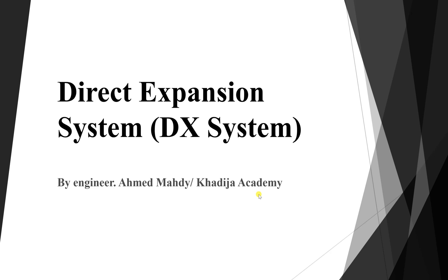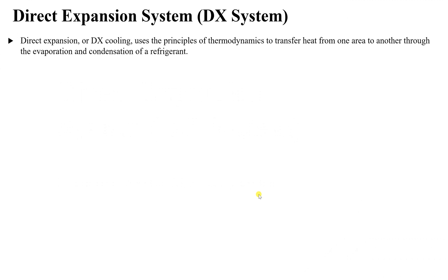The first type we are going to discuss is called the direct expansion system, or the DX system. Direct expansion cooling uses the principles of thermodynamics to transfer heat from one area to another through the evaporation and condensation of a refrigerant. It is exactly the system we discussed before — remember the cycle we talked about in the previous lesson on how air conditioning works.